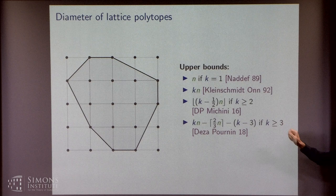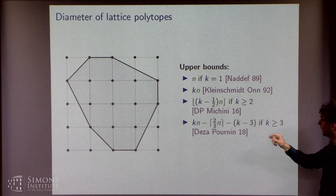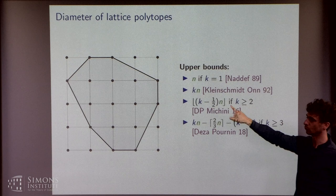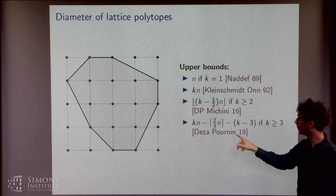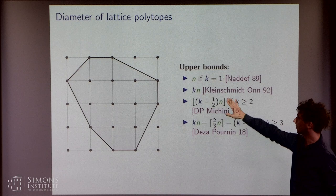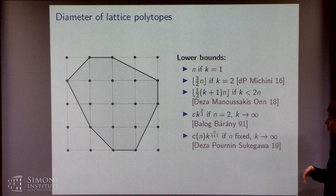The first result that I'm aware of is the upper bound of n given by Naddef in the case k equal to 1, which is especially nice because it's tight. For example, even the hypercube already attains that. Then a few years later, Kleinschmidt and Deza extended this result to general lattice polytopes, giving an upper bound of k times n. Then some years ago, we obtained this improved upper bound for the case k ≥ 2, and this upper bound is tight for k equal to 2 in any dimension. And a few years later, in 2018, Deza, Pournin, and Sukegawa gave a better bound for k ≥ 3.